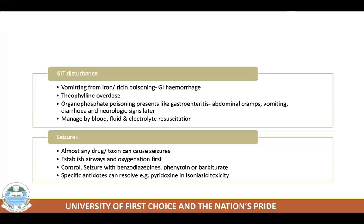Management of GI disturbance in the toxic patient follows general principles of blood, fluid, and electrolyte resuscitation when indicated. Parenteral antiemetics are used for persistent vomiting. Special measures include antidotal therapy, charcoal hemoperfusion for theophylline overdose, or hemodialysis for lithium overdose.